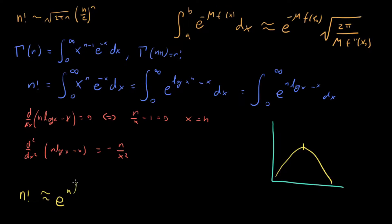f double prime of x naught is n over x squared evaluated at n, that's one over n.